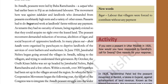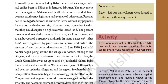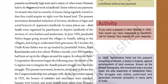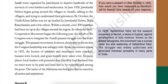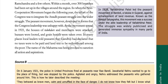By October 1920, the Awadh Kisan Sabha was set up headed by Jawaharlal Nehru, Baba Ram Chandra, and a few others. Within a month, over 300 branches had been set up in villages around the region. When the non-cooperation movement began the following year, the Congress tried to integrate the Awadh peasants' struggle into the wider struggle. The peasant movement, however, developed in forms that the Congress leadership was unhappy with. As the movement spread in 1921, the houses of talukdars and merchants were attacked, bazaars were looted, and grain hoards were taken over. In many places, local leaders told peasants that Gandhiji had declared that no taxes were to be paid and land had to be redistributed among the poor. The name of the Mahatma was being invoked to sanction all action and aspirations.